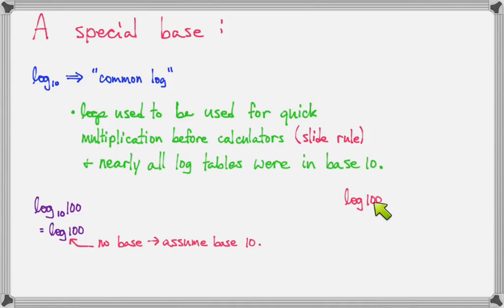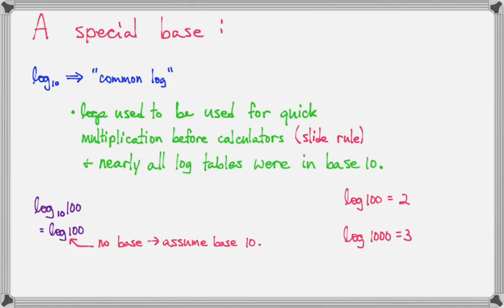So let's do log of 100. That would equal 2 because 10 to the second power is 100. And log of 1000 — 10 to the third power is 1000, so log of 1000 is 3. These are two you can do on your calculator, and your calculator can always do logs in base 10. Log of 10: 10 to the first power is 10, so that would be 1.